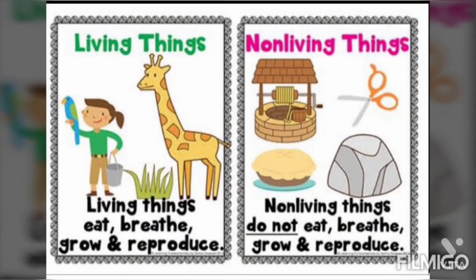Children, living things are different from non-living things. Living things eat, breathe, grow and reproduce. Non-living things do not eat, breathe, grow and reproduce. Children, I hope all of you understood the lesson.